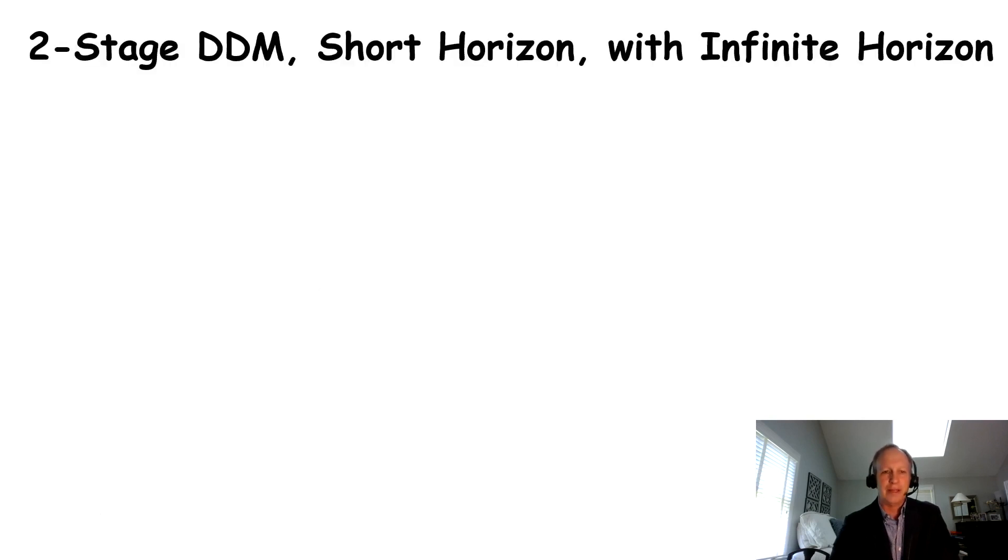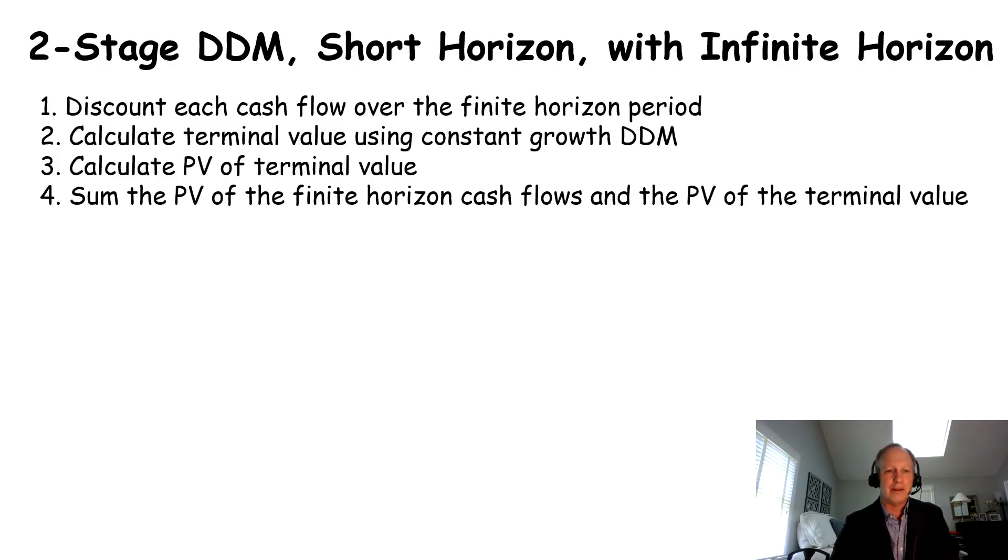Now, we get to the more complicated one. And we're just going to break it down. Two-stage dividend discount models. A short horizon and then an infinite horizon. So for this, there's really four steps. You want to discount each cash flow over the finite horizon period. You want to calculate a terminal value using this constant growth, the Gordon growth model. So we've already figured out how to do that. But we've got to calculate, then, the present value of that terminal value. That's an extra little step that makes it a little tricky. And then we're going to sum that terminal value plus the present value of the finite horizon cash flows. Sounds like a lot of words. It's a lot easier when you see a problem. Let's check it out.